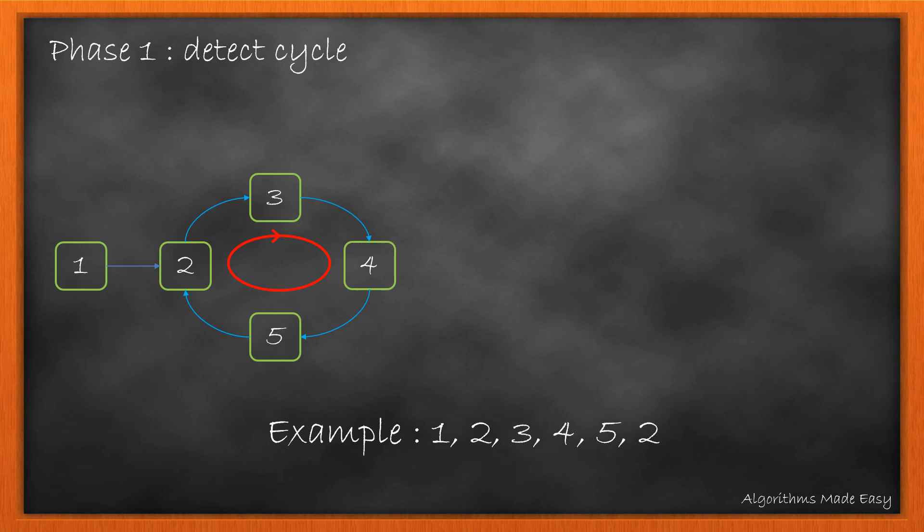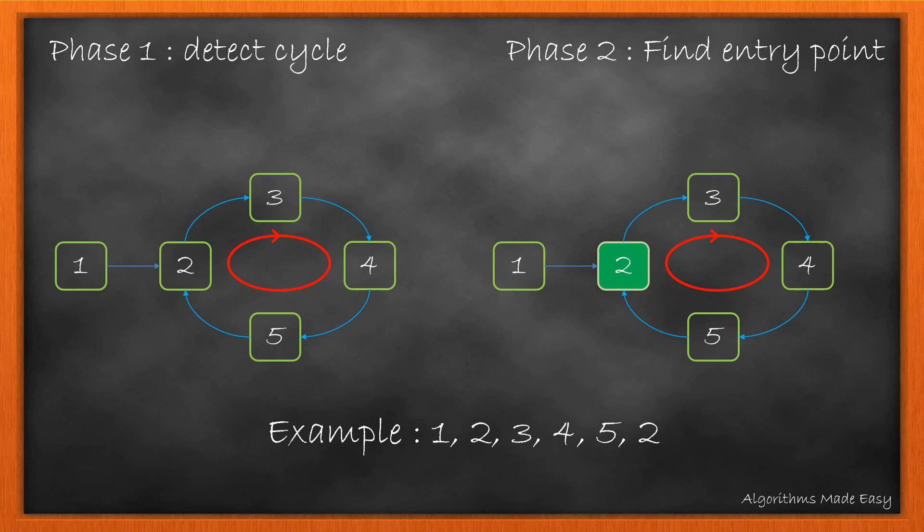The algorithm works in two phases. Phase one is to detect the cycle which can be seen in this diagram. And the second phase is to find out the entry point of the cycle, which is 2 for this example.